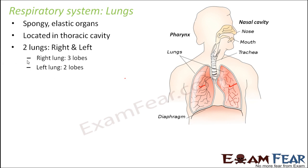There are two lungs, right and left. The right lung has three lobes whereas the left lung has two lobes. The right lung is divided into three lobes and the left lung is divided into two lobes. Near the left lung there is a little notch — this is the place where the heart is located. The heart is located in this space made by the left lung.